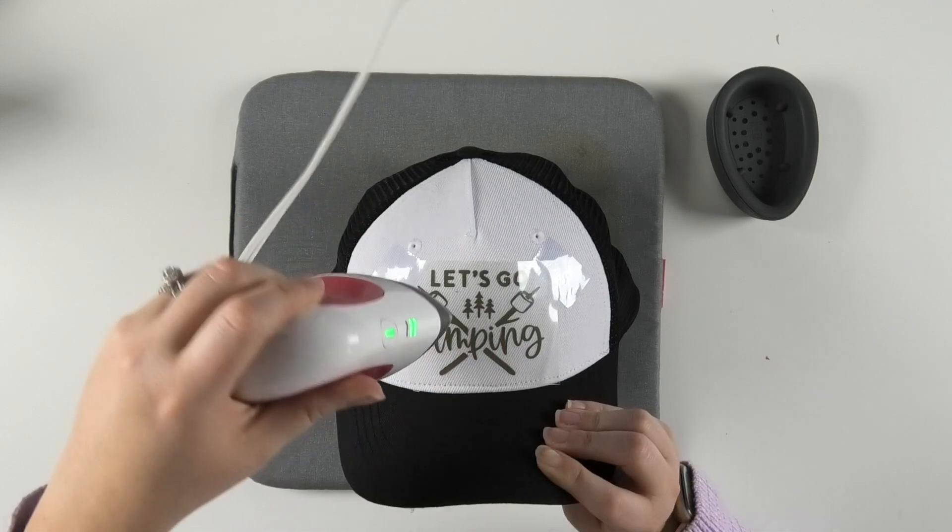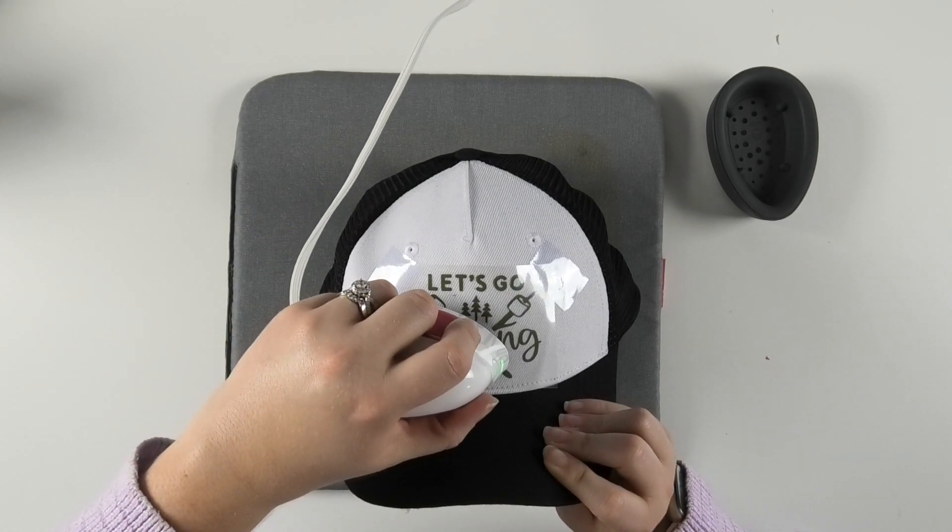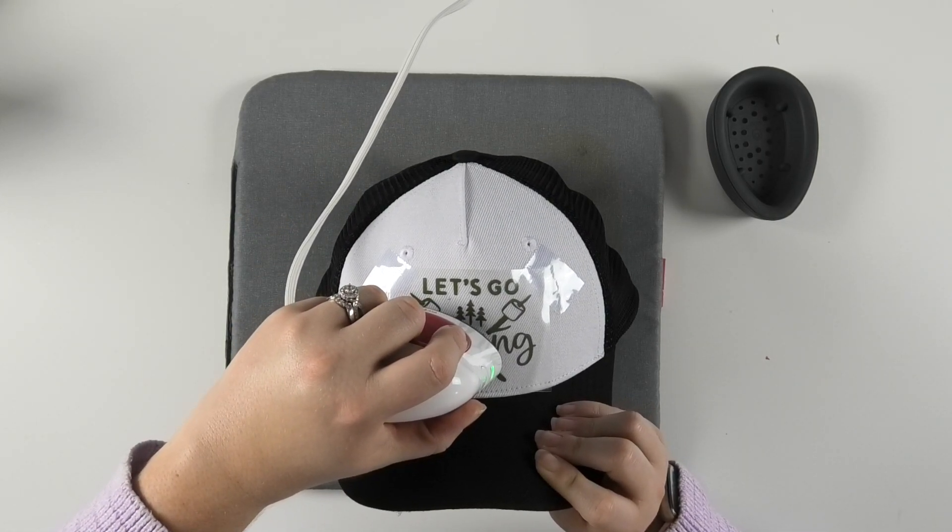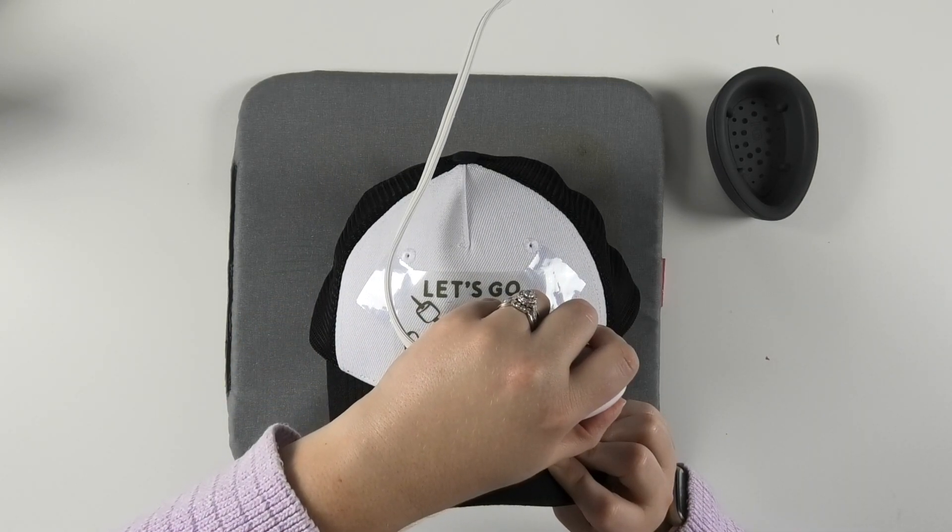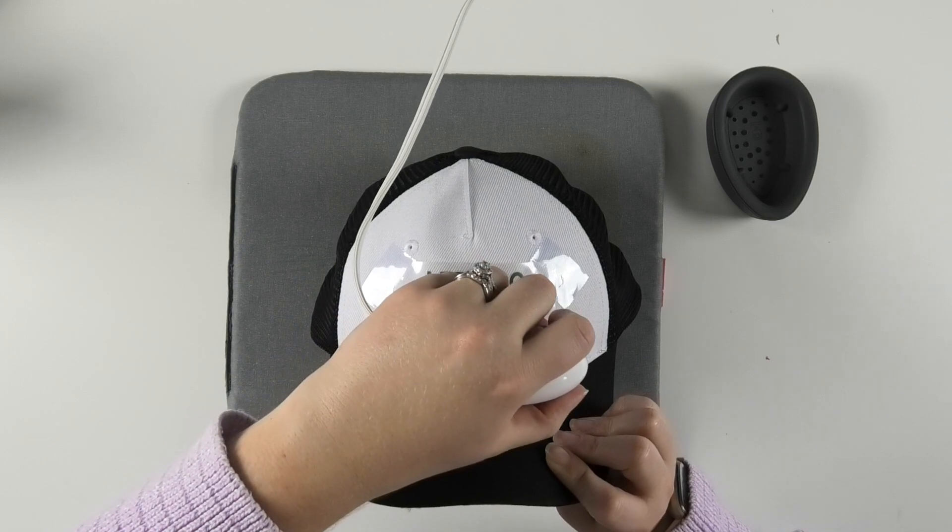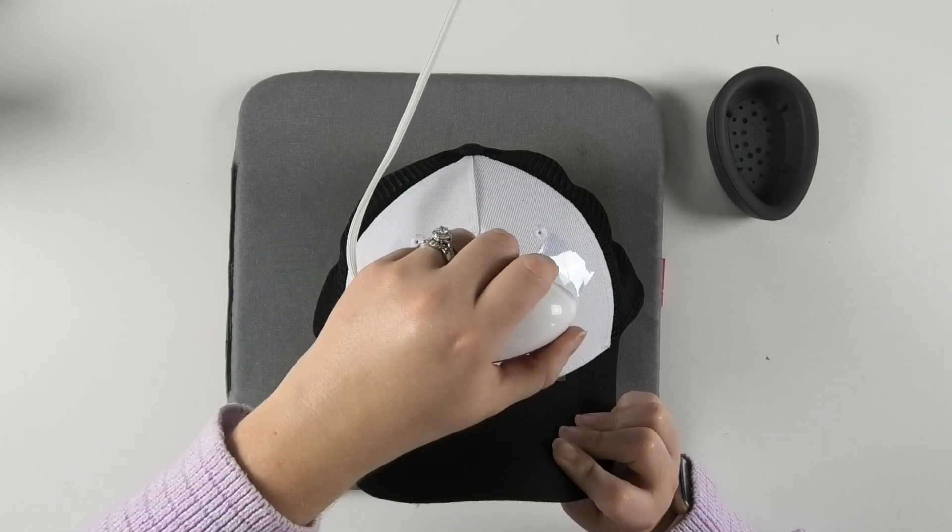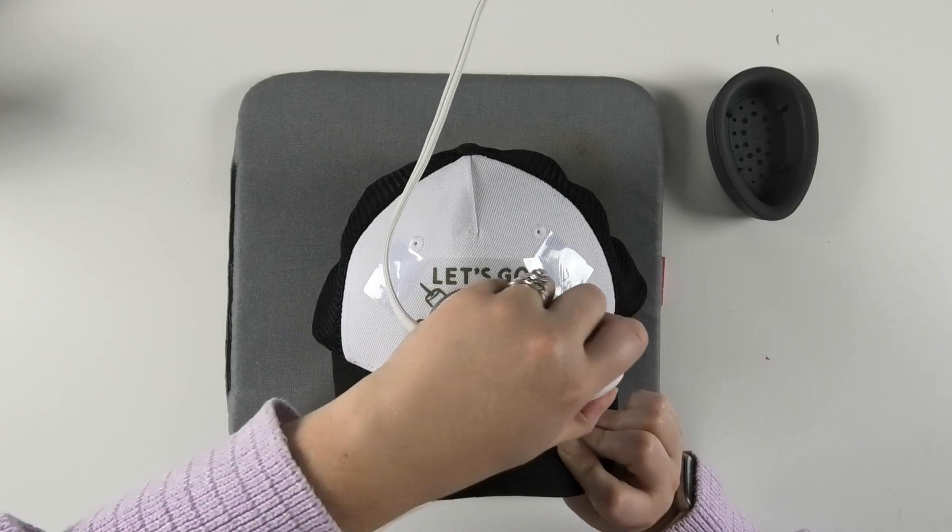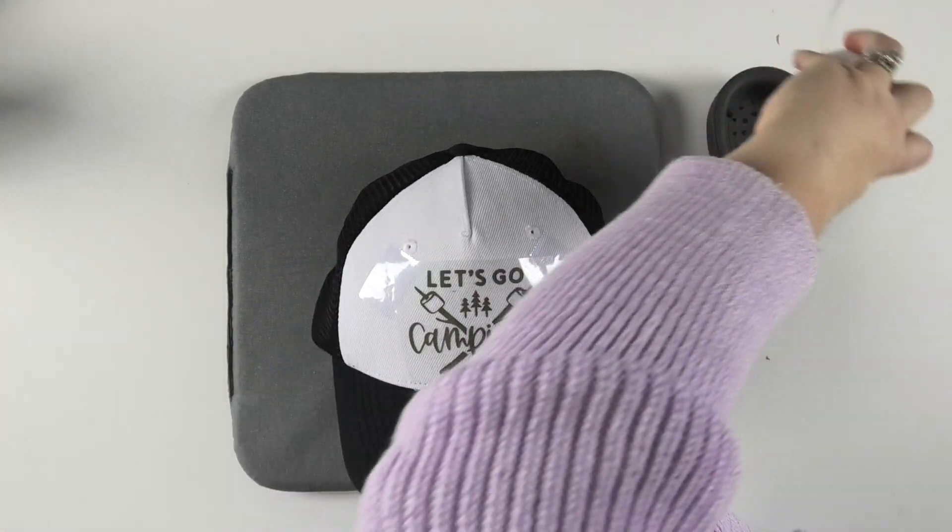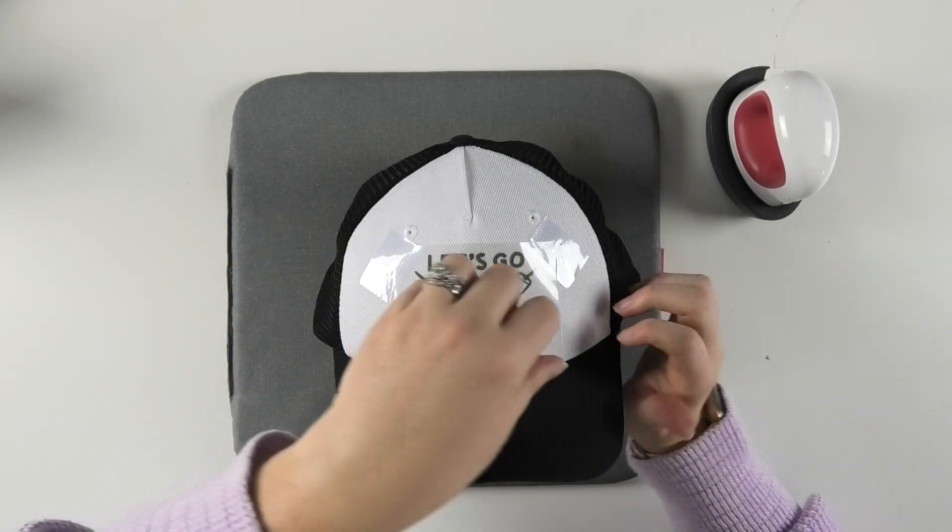But as long as the person is not washing this hat, you honestly don't need to heat your HTV all that long to get it to stick long term. Since it's not going to be going through the washing machine, it's definitely not as big of a deal. So I don't like to hold it in place for more than about three seconds at a time. So I'm just going to kind of roll it across the hat like this, and then we'll check it and see if the carrier sheet will come off.